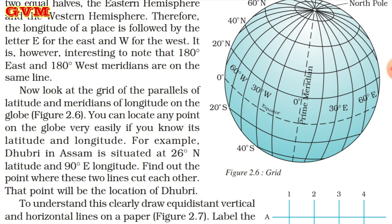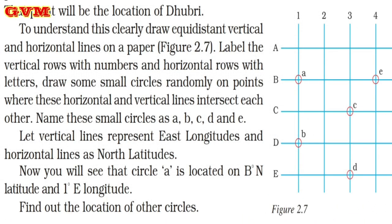To understand this clearly, draw equidistant vertical and horizontal lines on a paper. Label the vertical rows with numbers and horizontal rows with letters. Draw small circles randomly on points where these horizontal and vertical lines intersect each other. That point will be the location of Dhubri in Assam.